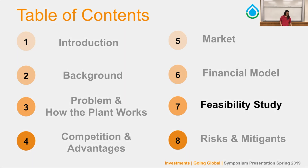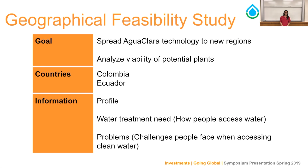As Aguaclara hopes to expand its technology and bring treatment plants to new regions, the team conducted a geographical feasibility study to determine the viability of bringing these plants to countries including Colombia and Ecuador.